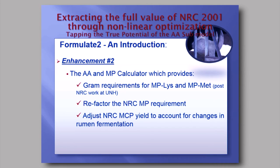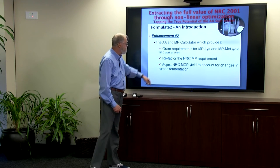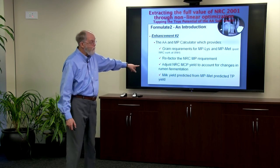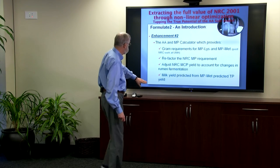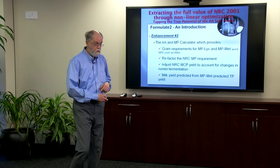The calculator also gives us the ability to adjust the microbial crude protein yield prediction to account for changes in rumen fermentation. Most importantly, the calculator provides a milk yield prediction based on model-predicted true protein yield, calculated from model-predicted methionine supply. The post-NRC work at the University of New Hampshire found that the most accurate prediction of the NRC model was true protein — not milk — so milk yield is worked back from the model's true protein prediction.